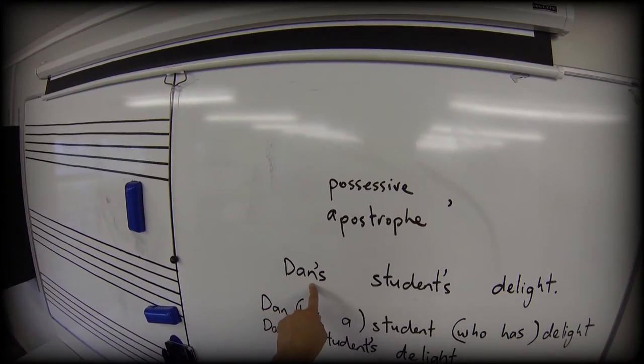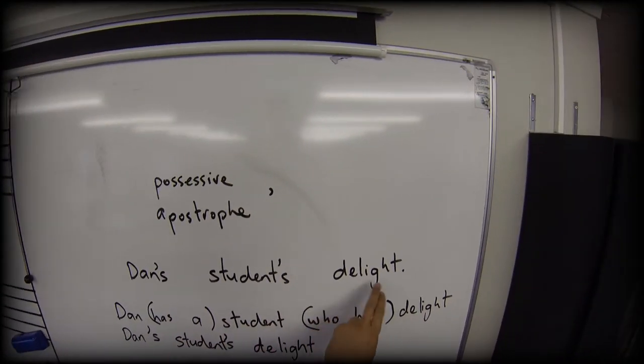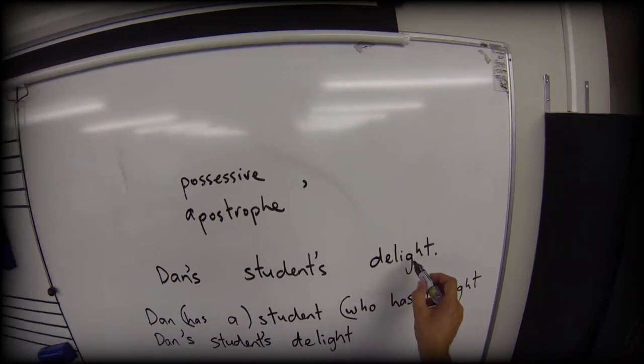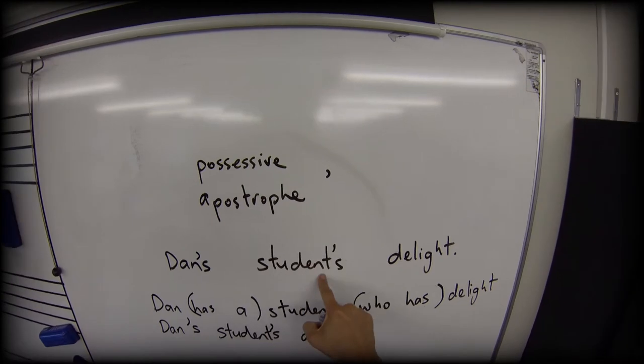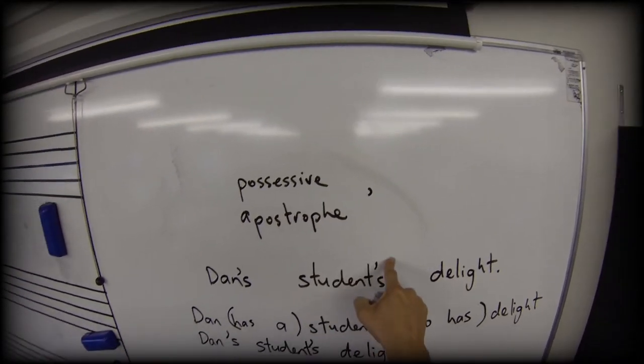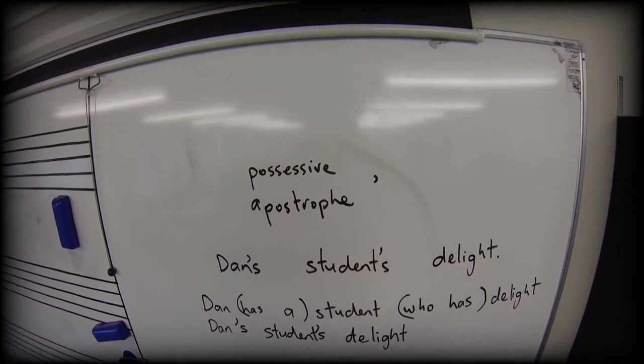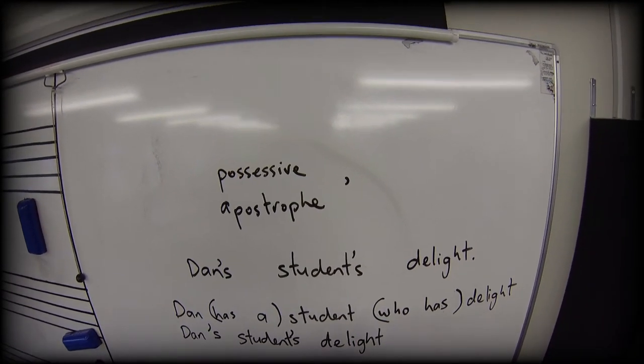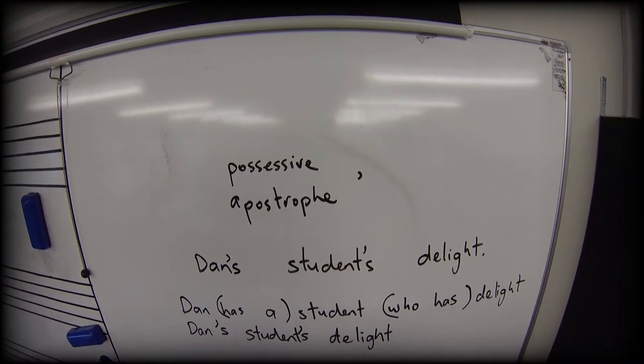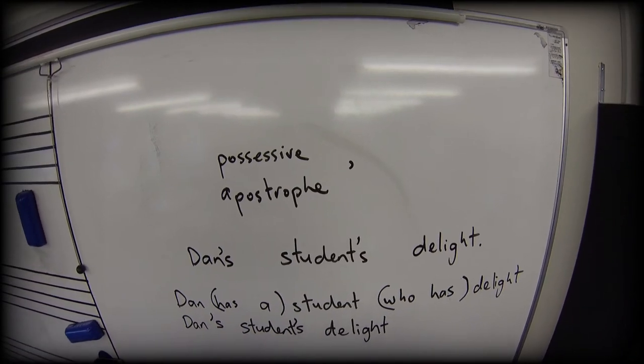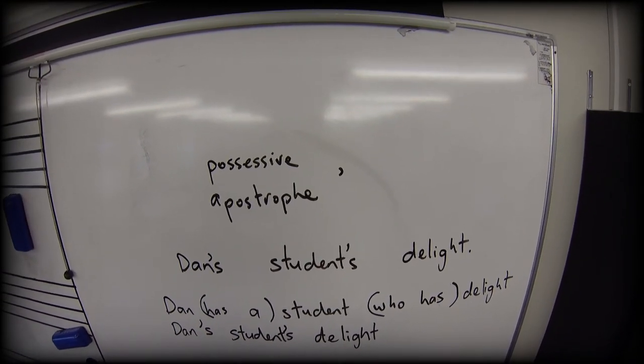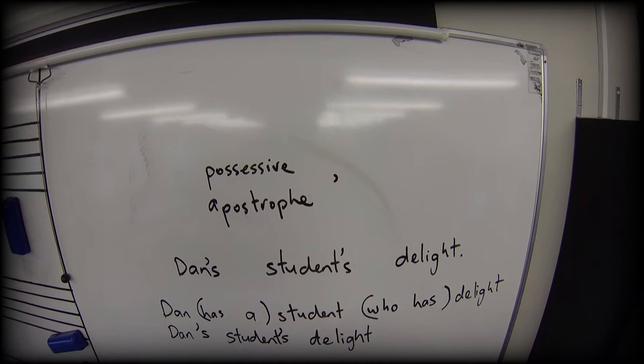So that's how I get Dan's student's delight. So the delight is owned by a student, not a group of students. So particularly if your word ends in S, be really careful about where you place your apostrophe, because it may actually change whether you're talking about one thing or many.